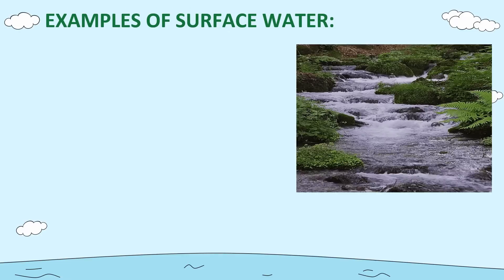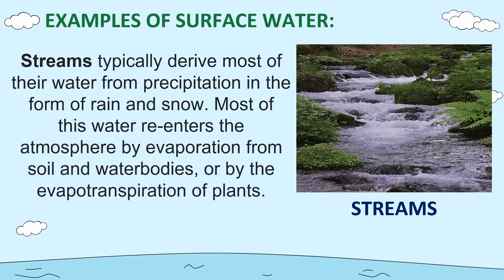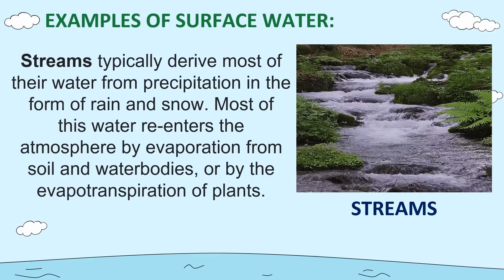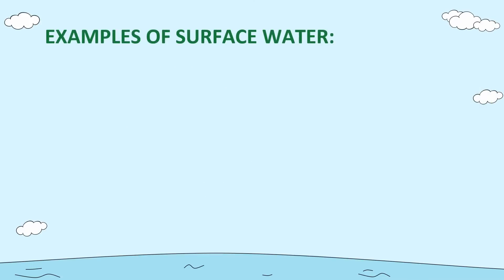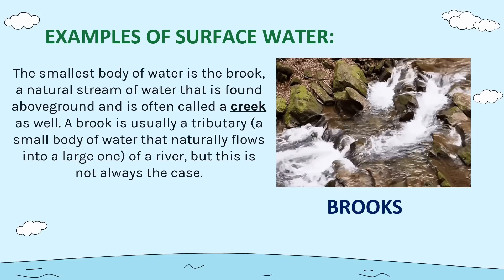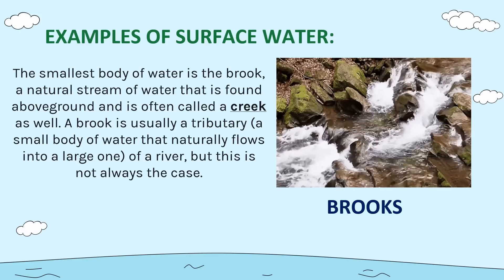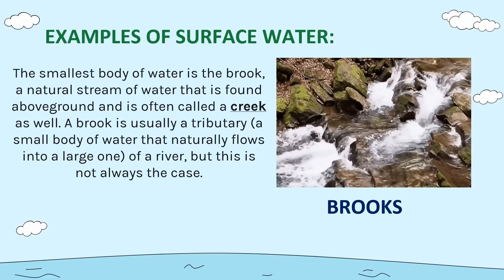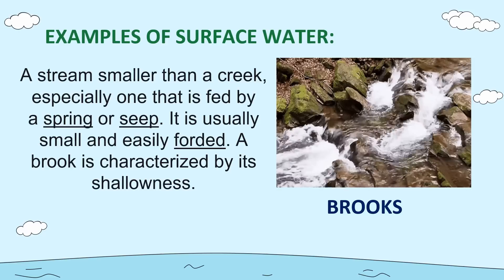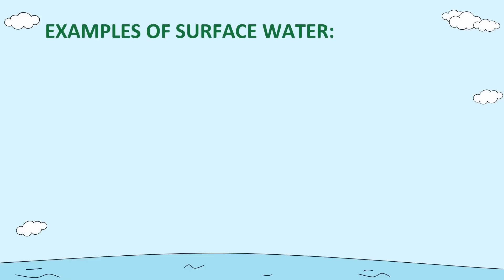Another example of surface water is streams. Streams typically derive most of their water from precipitation in the form of rain and snow. Most of this water re-enters the atmosphere by evaporation from soil and water bodies, or by the evapotranspiration of plants. Another example is brooks. The smallest body of water is the brook — a natural stream of water found above ground, often called a creek. A brook is usually a tributary of a river, smaller than a creek, especially one fed by a spring or seep. It is usually small and shallow, and easily forded.